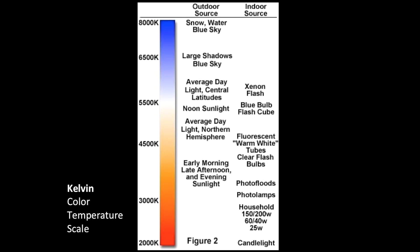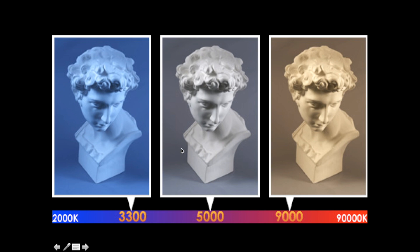Shooting in RAW gives you unprocessed color information that you can adjust after making the picture. If not shooting RAW, you need to adjust white balance to match your light source. You can see that for the lighting at about 5000 degrees Kelvin, shooting at a lower or higher temperature will change the color.